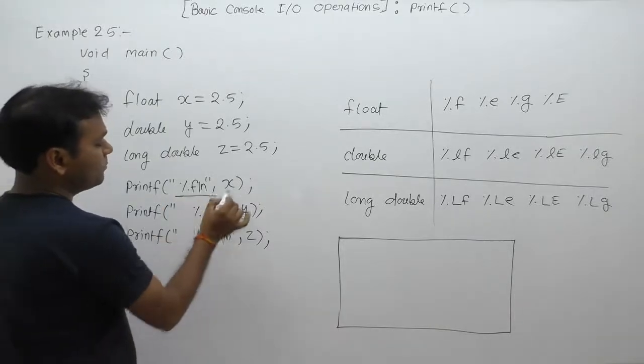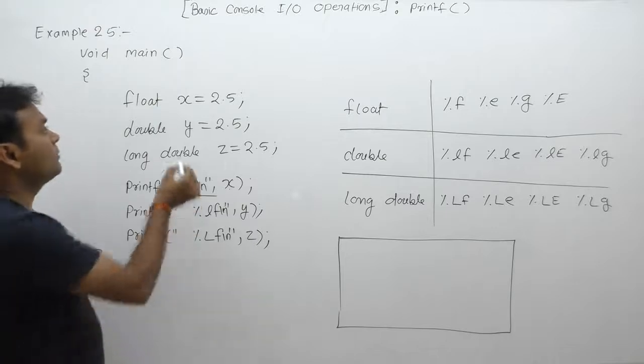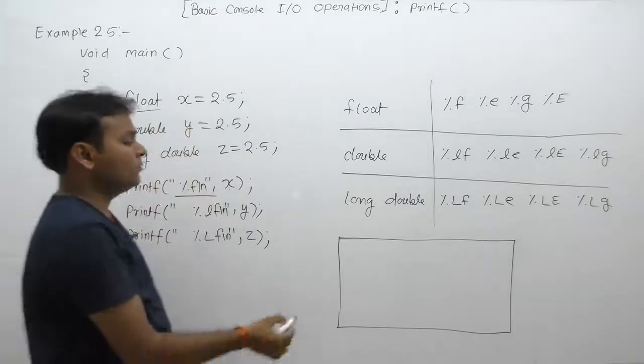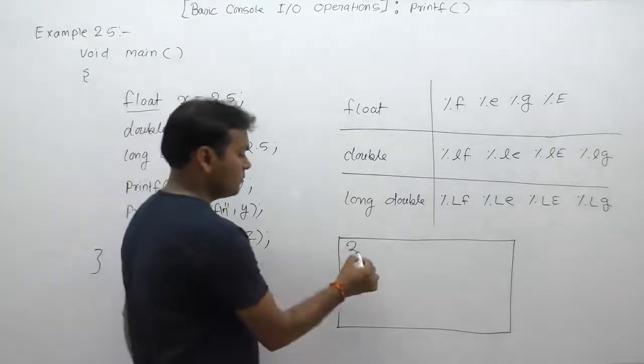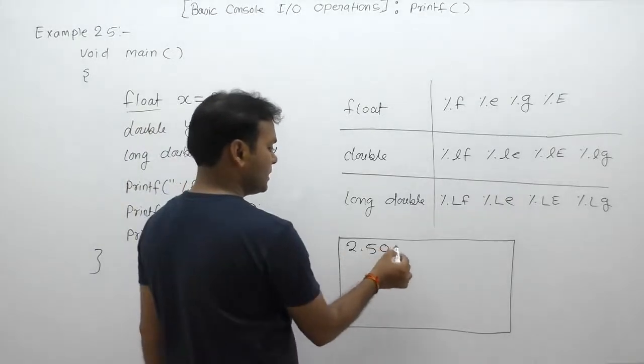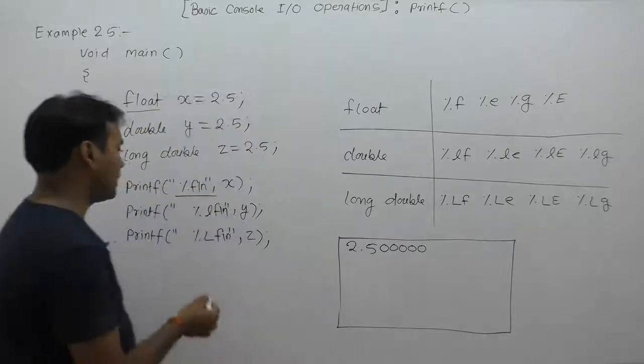Type of x is float, therefore it is displayed using %f. The default precision is six decimal places.